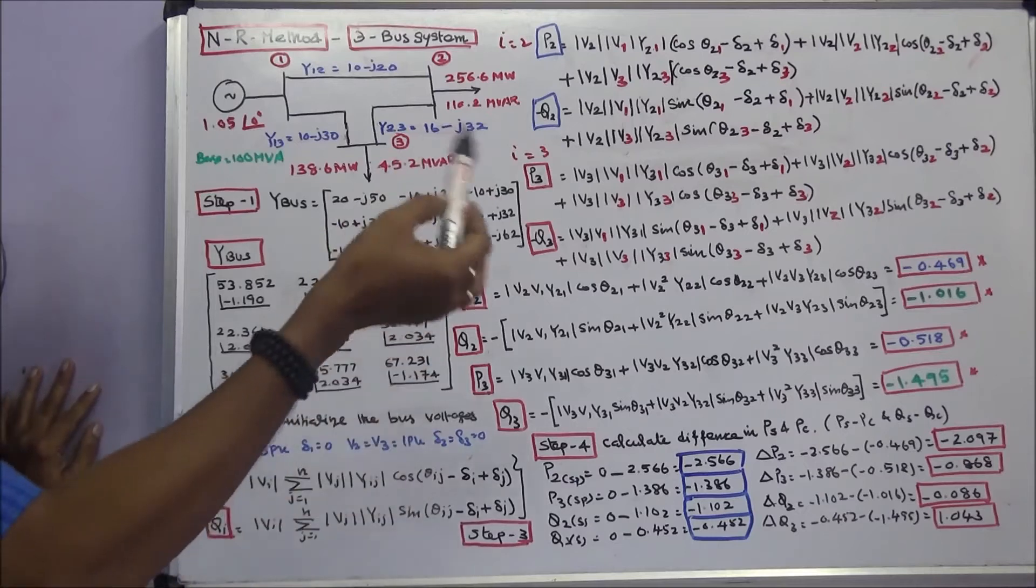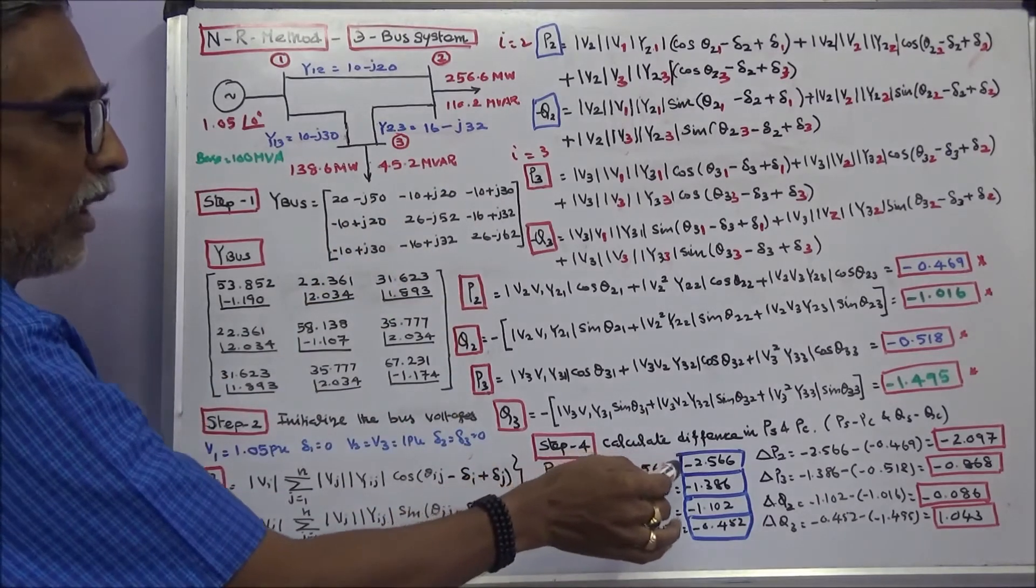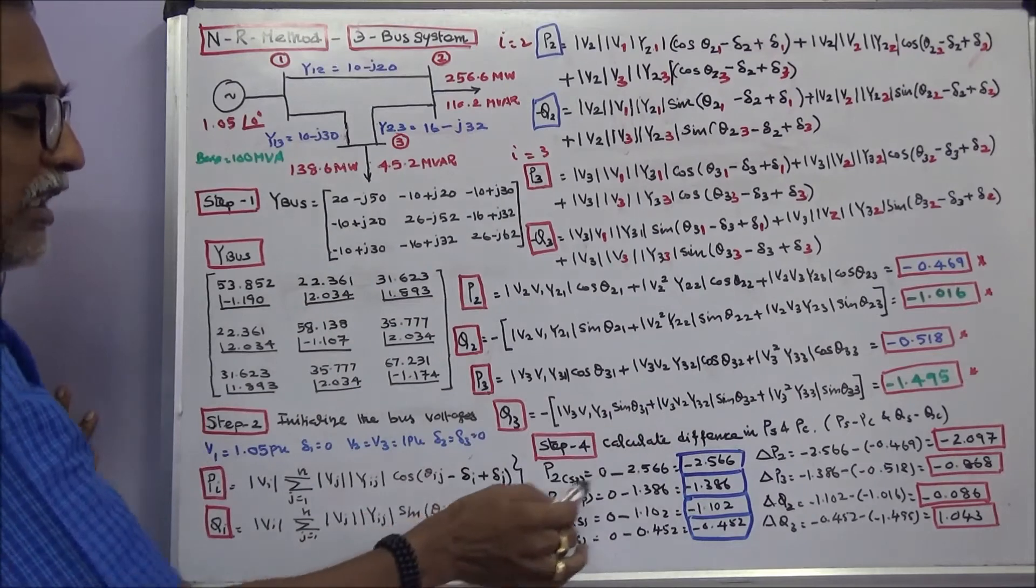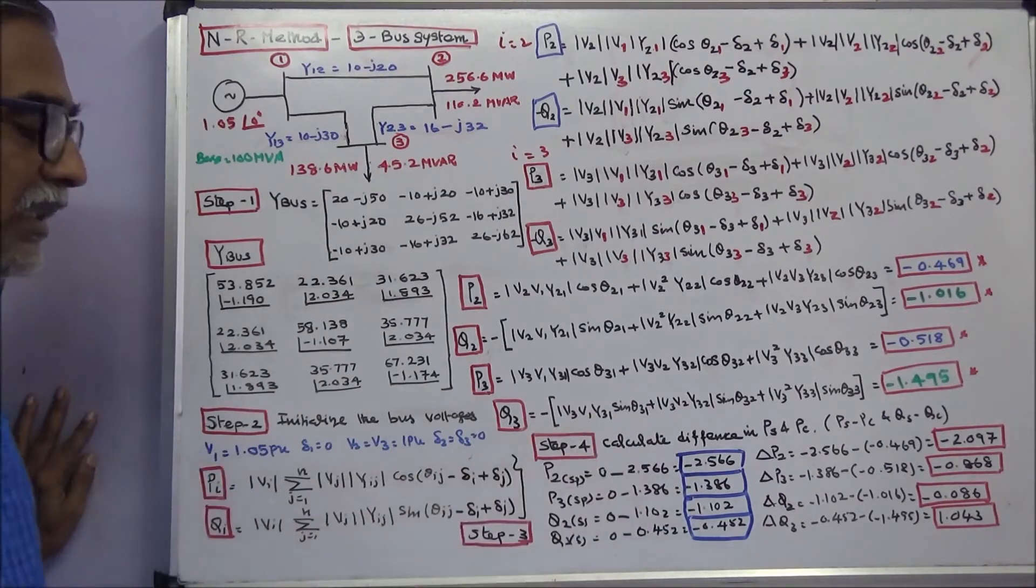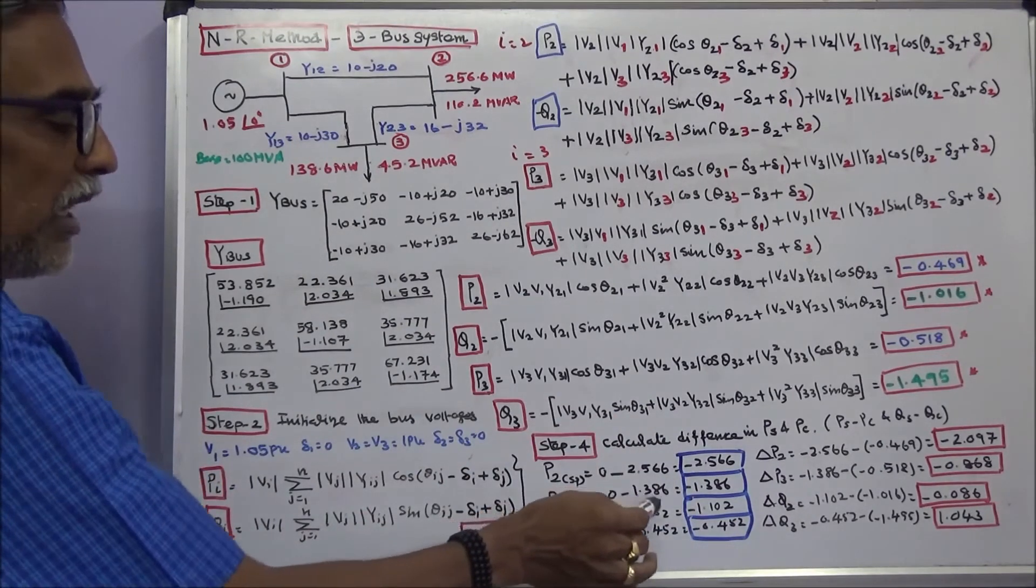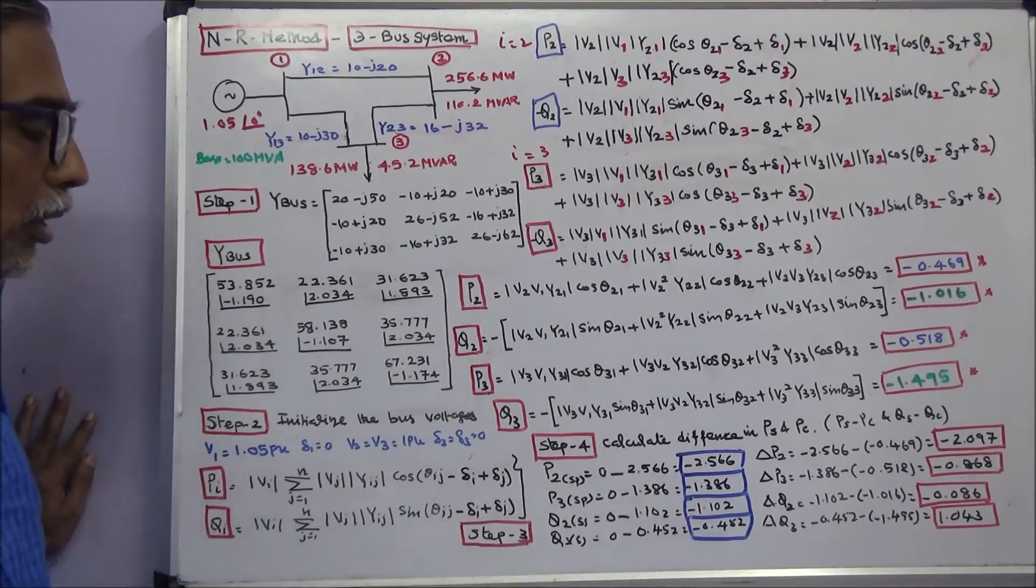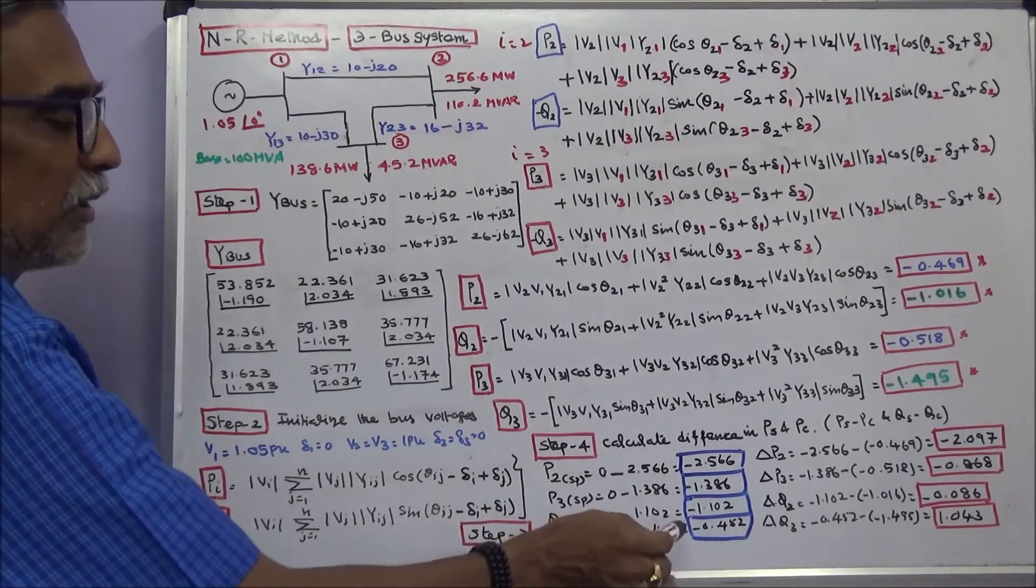Now I can easily calculate P2 specified is equal to minus 2.566, P3 specified is minus 1.386, Q2 specified is minus 1.102, Q3 specified is minus 0.452.